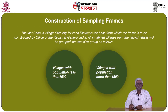For construction of sampling frames, the last census village directory for each district is the base from which the frame is constructed by the Office of the Registrar General of India. All inhabited villages from the taluks or tahasils are grouped into two size groups: (1) villages with population less than 1500, and (2) villages with population more than 1500.